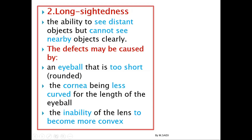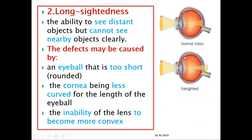If you look at the picture here, it shows what is really happening. In normal vision the image is formed on the retina, but with long-sightedness the image is formed behind the retina. Our job is to bring the image back to the retina, so we need to reduce the width of the beam so that the image is brought back to the retina.